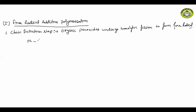Benzoyl peroxide has the structure Ph-C(=O)-O-O-C(=O)-Ph. When you heat it or give light, homolytic cleavage takes place. Homolytic means one bond breaks and the two atoms each take their own electron back. This is called homolytic cleavage.